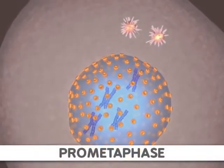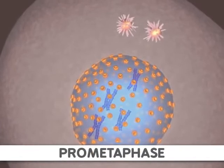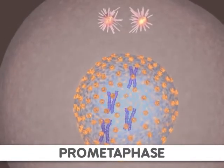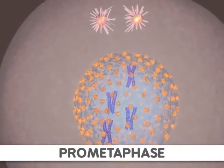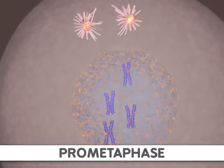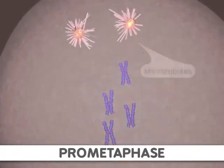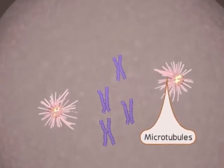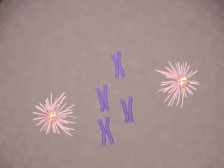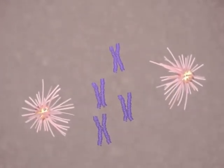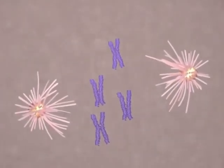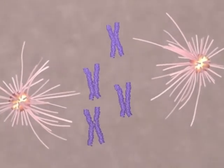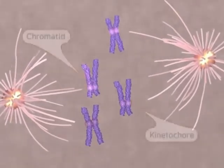Next, prometaphase begins when the nuclear membrane is broken down. At the same time, microtubule strands, or spindle fibers, are growing from the centrosomes. These strands attach to a protein structure called the kinetochore. One kinetochore is attached to the centromere of each sister chromatid.